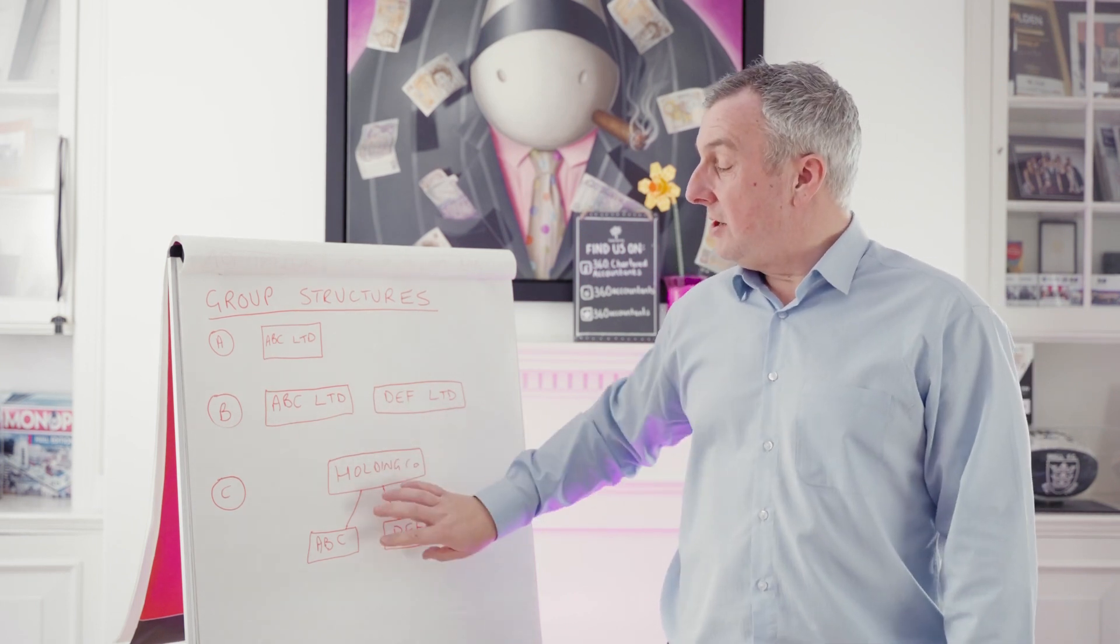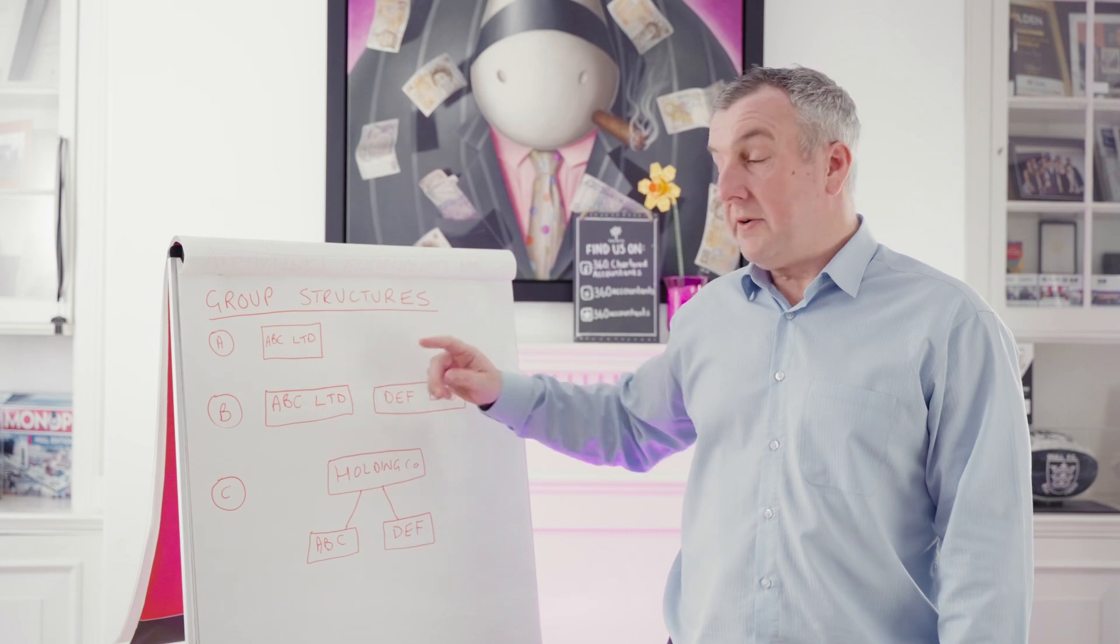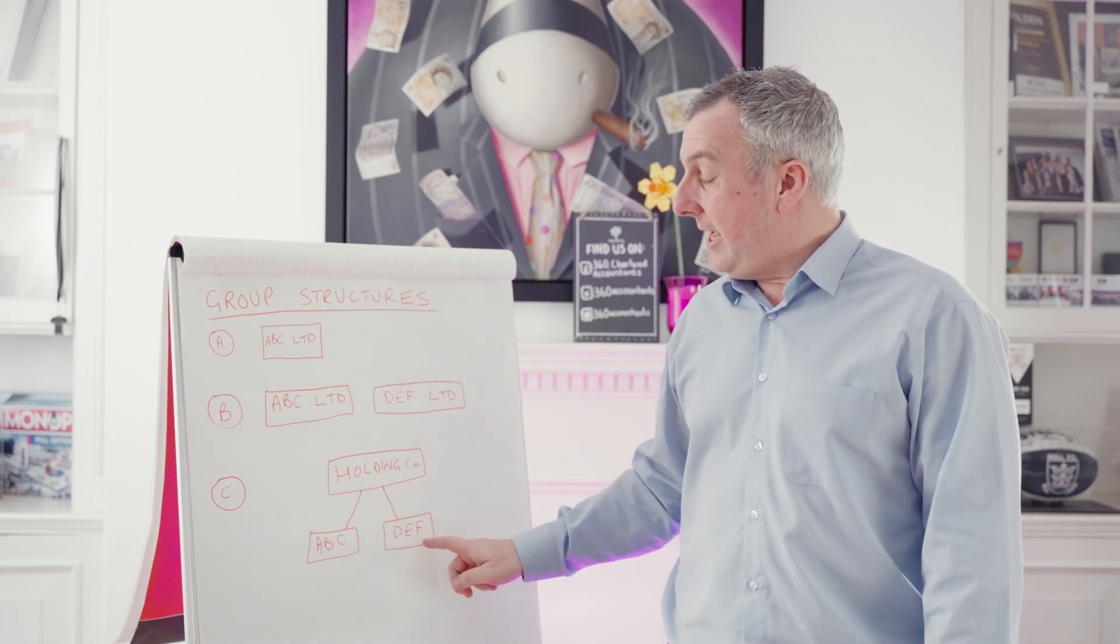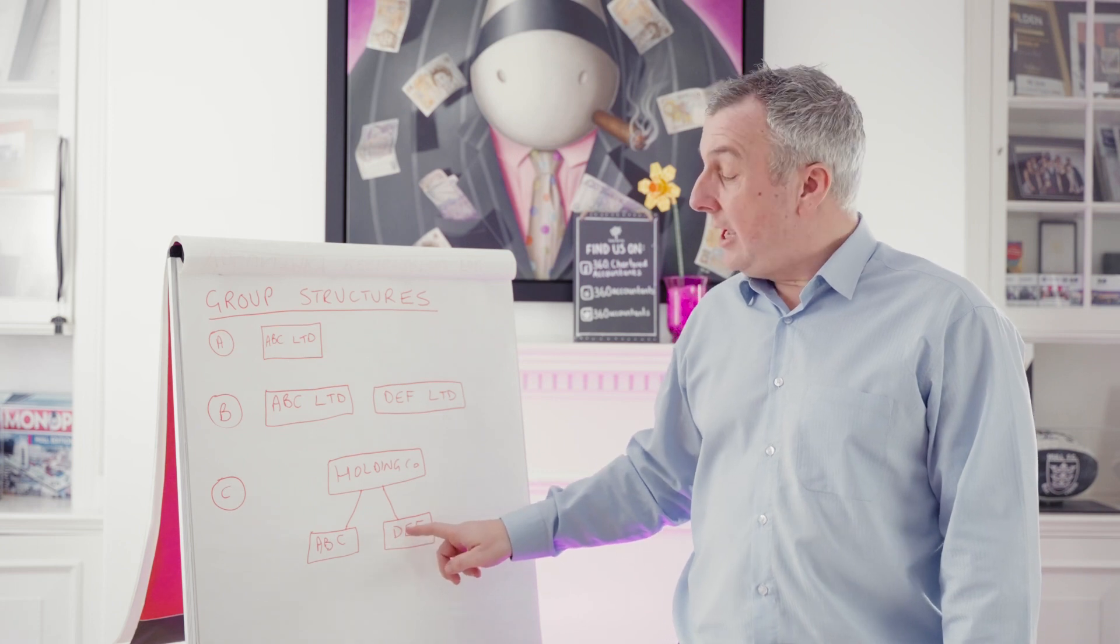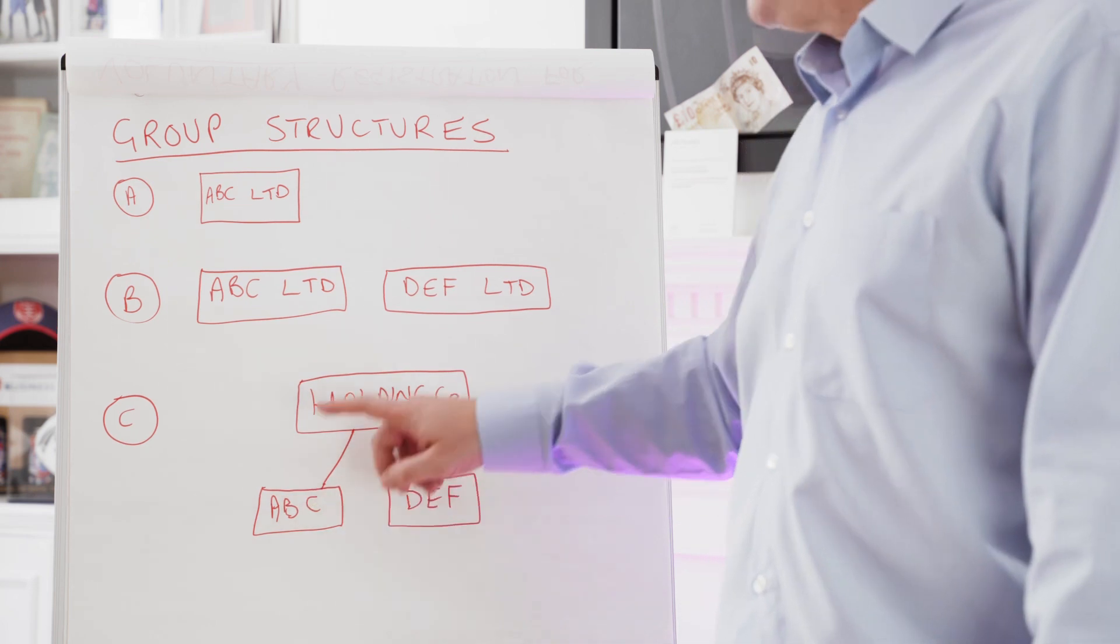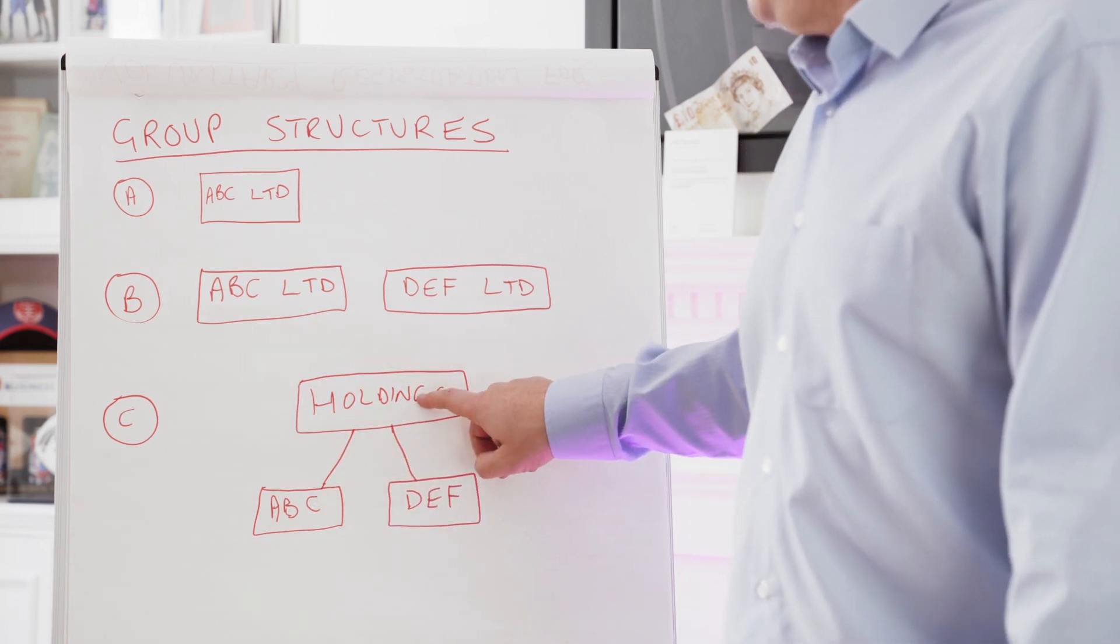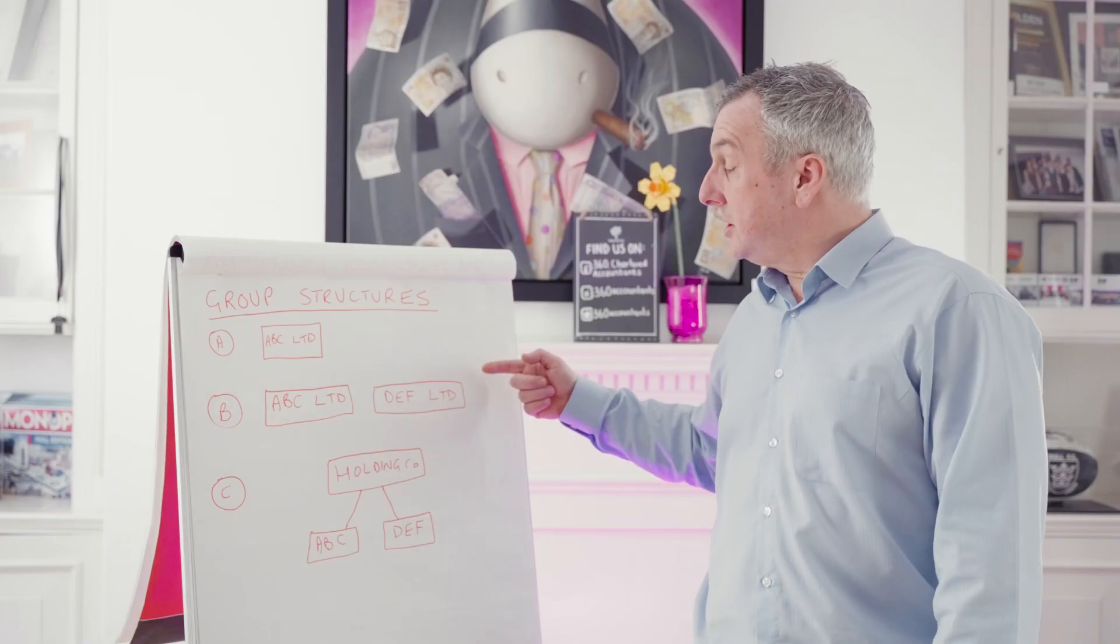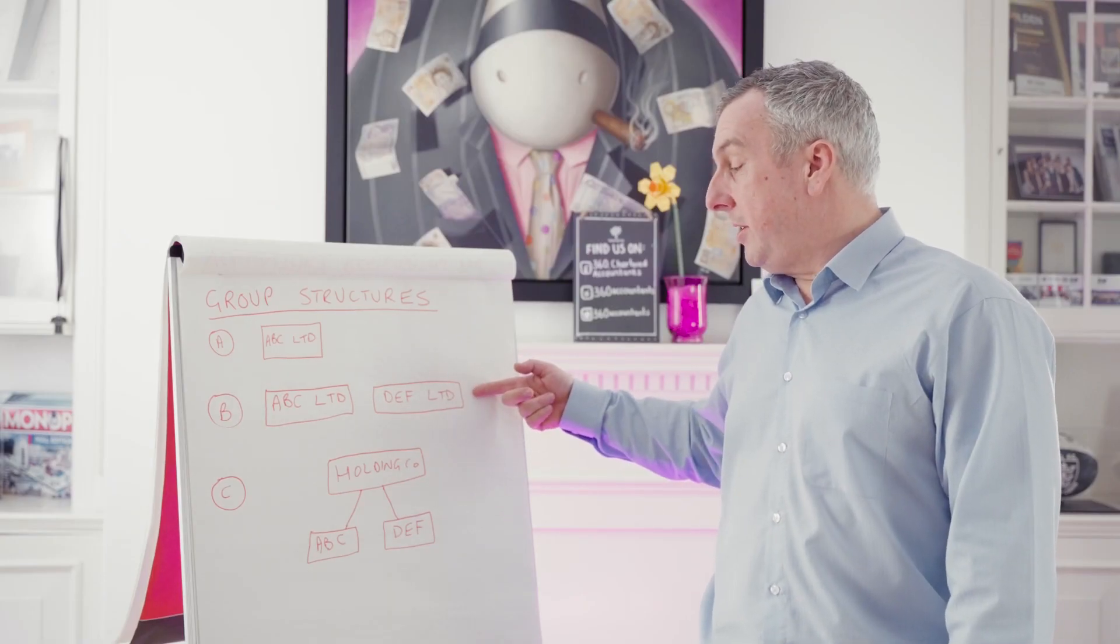There's quite a few advantages of this structure over structure B. So for example, if DEF is loss making, it can actually offset those losses against the profits in either ABC or the holding company and reduce the tax payable by those two companies. You're not able to do that under scenario B.